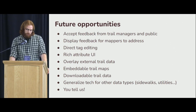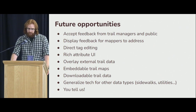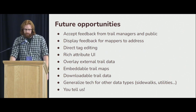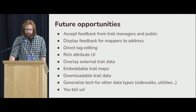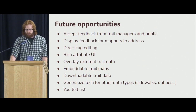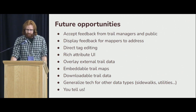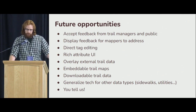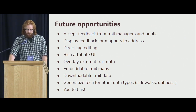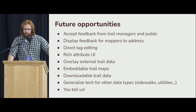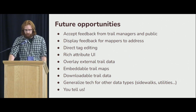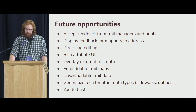This is just alpha, but there are so many different opportunities we could build into this. We could accept feedback from trail managers and the public to close that data loop, and display feedback from mappers to address. We could have tag editing directly in there, attributes that are nice and pretty and not just raw tags, and we could overlay external trail data. So if you're an app that shows trails and people give feedback, you could have an API endpoint and contribute that data back to OpenStreetMap mappers, or have a USGS trails layer.